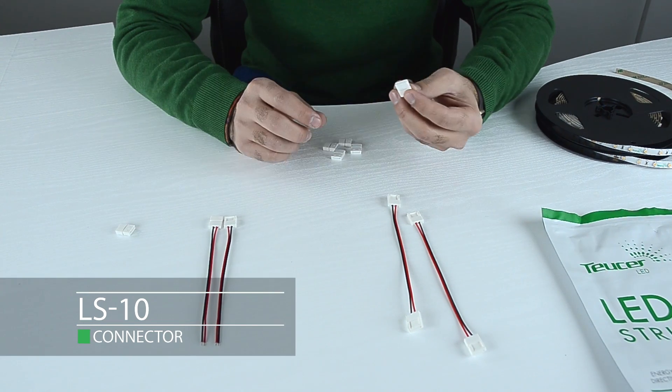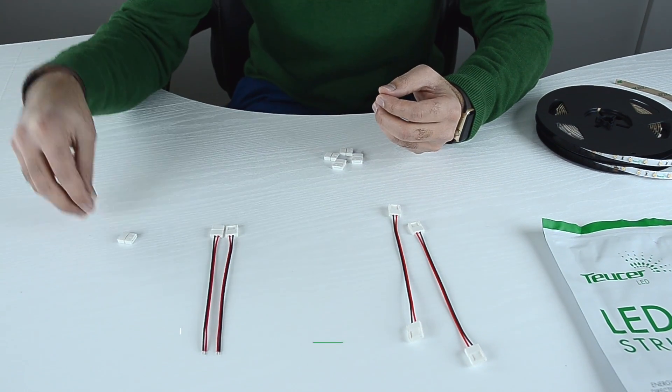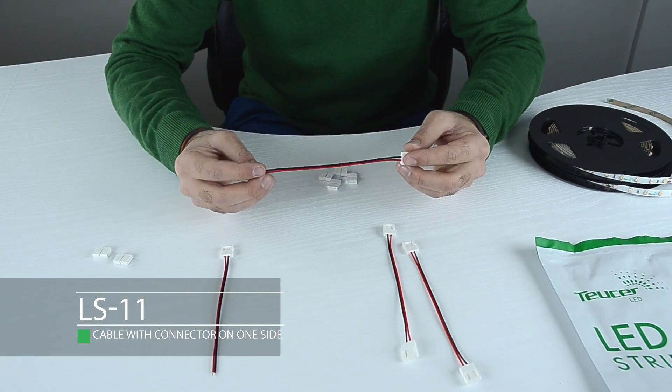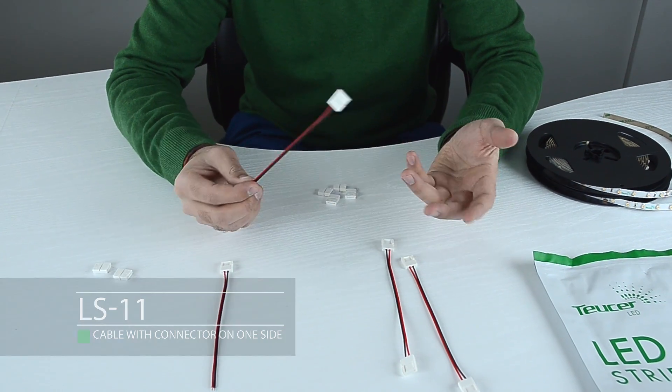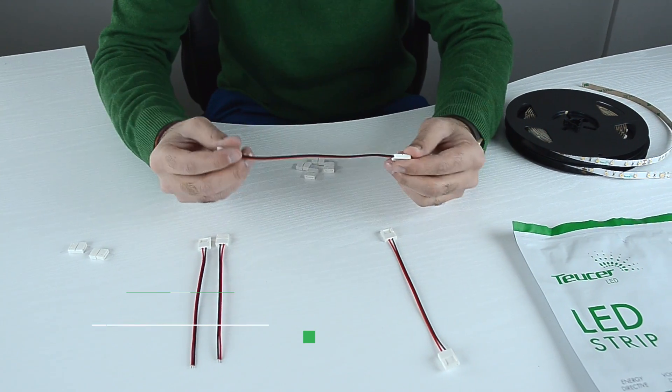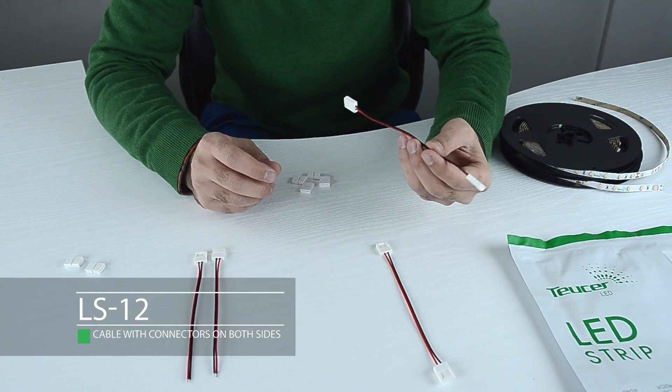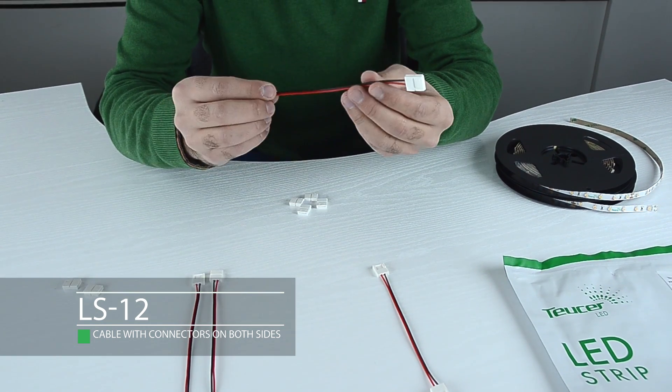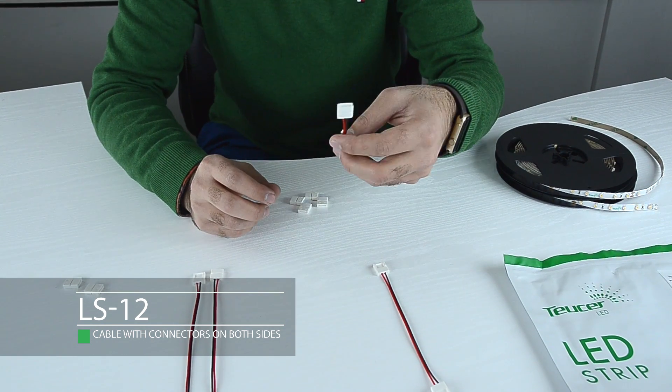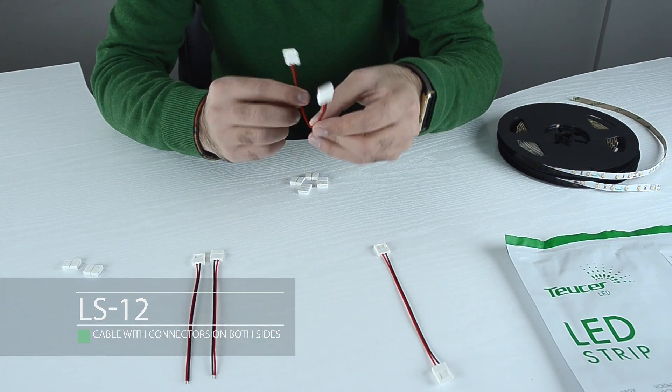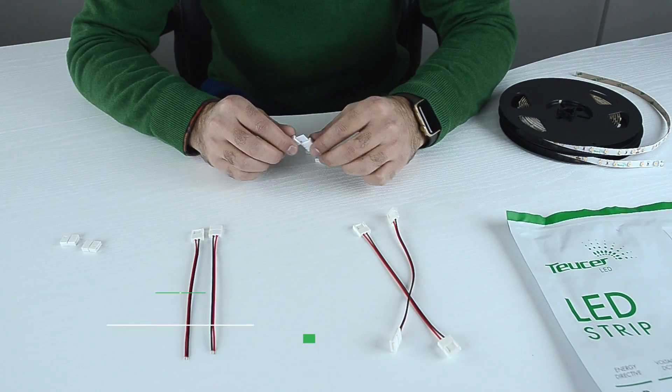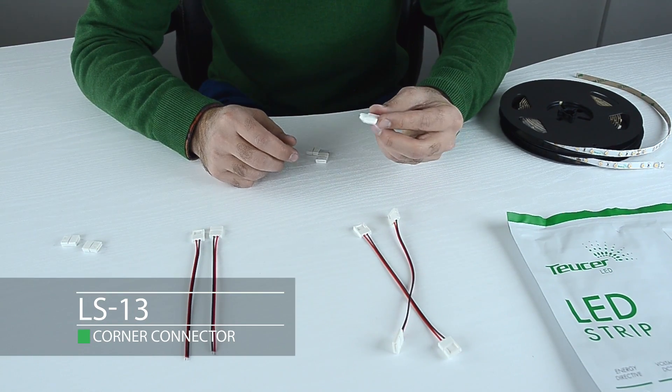LS10 can be used for a continuous run. LS11 is used to connect strip to the driver. LS12 is used to connect two strips with an extra length of cable. This is for linking around corners and angles, ideally for difficult angles. LS13 is a rigid 90 degree corner connector.